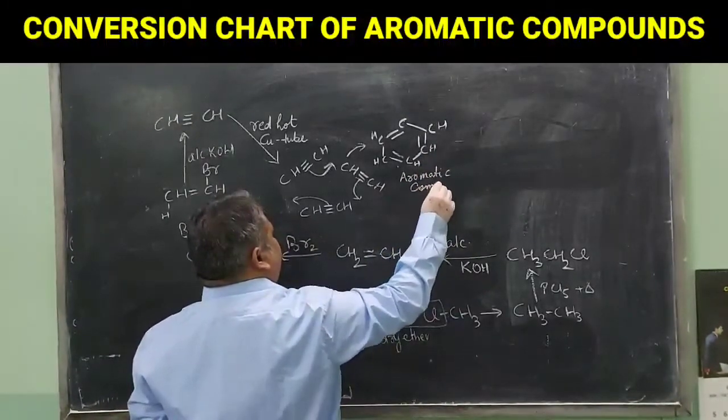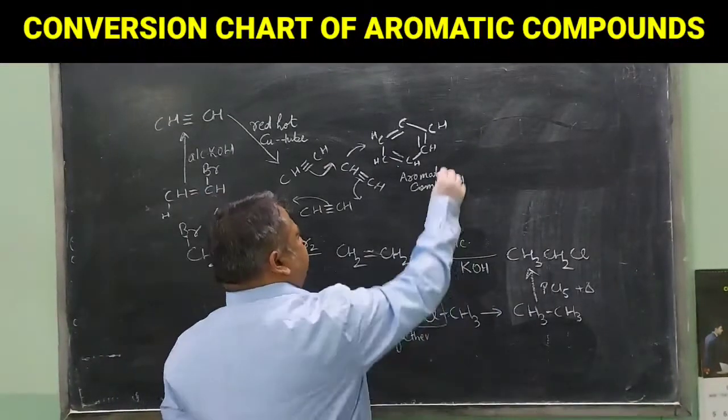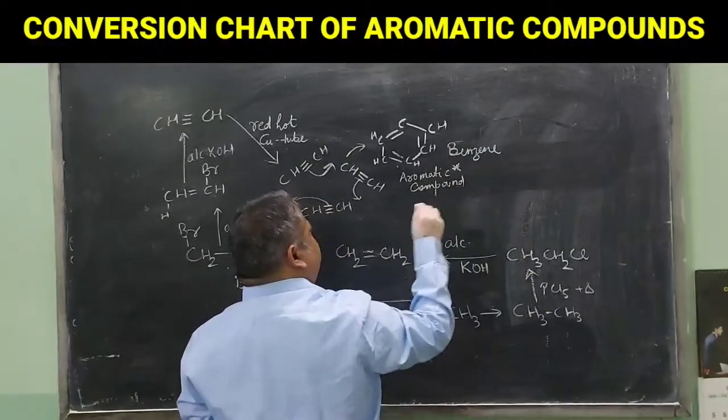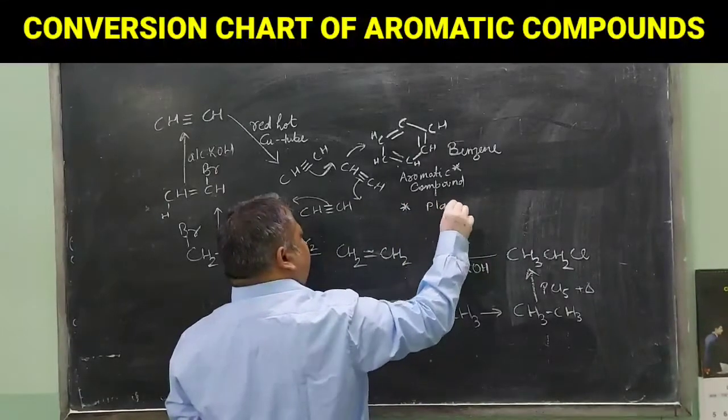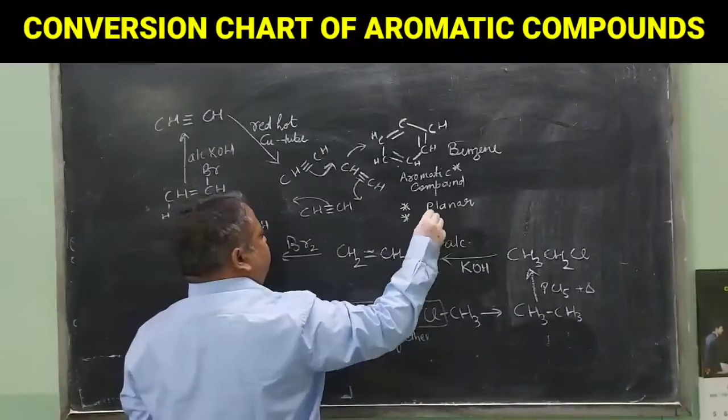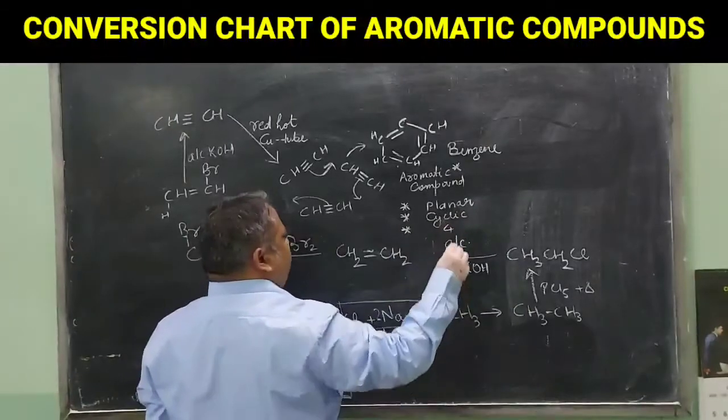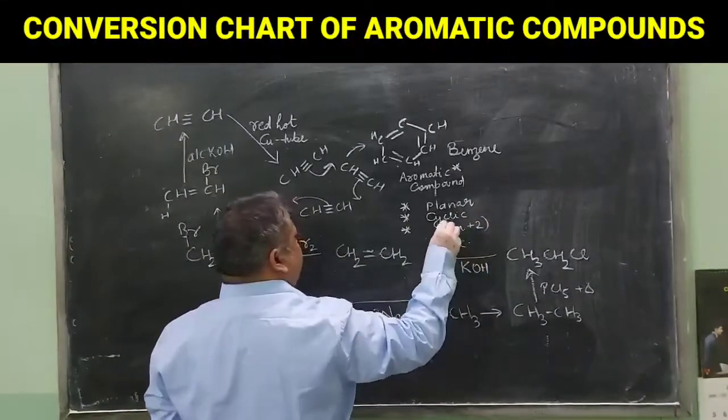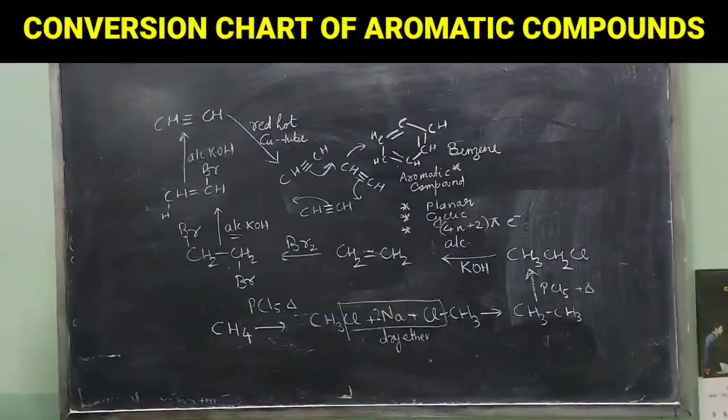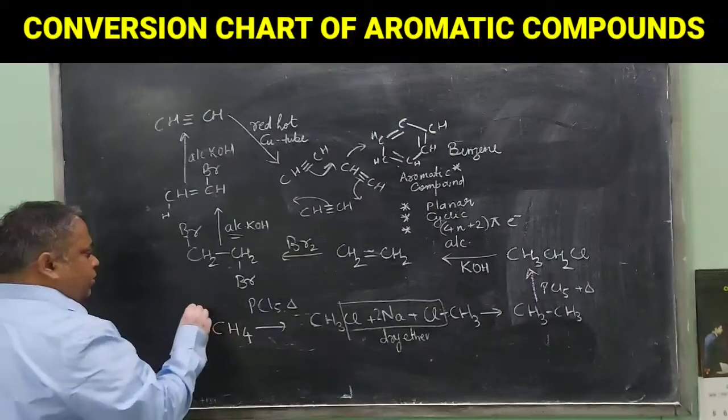What is its specific name? Its common name is benzene, and it is called aromatic because it is planar, it is cyclic, and it has 4n plus 2 pi electrons. These are the criteria for aromatic. So in this way we can make aromatic compound from a simple hydrocarbon.